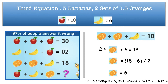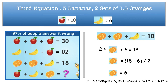Now jumping to our third equation. We have three bananas and two sets of 1.5 oranges, so 2 times 1.5 oranges plus 3 bananas equals 18. We know 3 bananas equals 6, so substituting: 2 times 1.5 oranges plus 6 equals 18, giving 1.5 oranges equals 6. Therefore, one orange equals 6 divided by 1.5, which is 60 divided by 15, equal to 4.